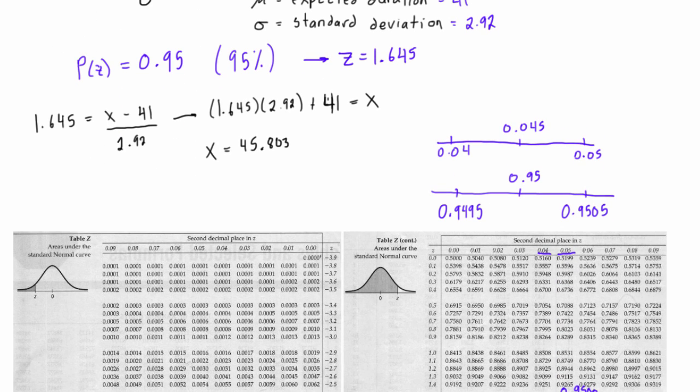Let's look down here. We're saying that if we center our mean here, our mean was 41 and we're finding this x value here to be 45.803. So that's μ and that's x. This is saying we have a 95% probability that this project will finish before 45.803 days—so anywhere in this shaded region we have 95% chance of that happening.